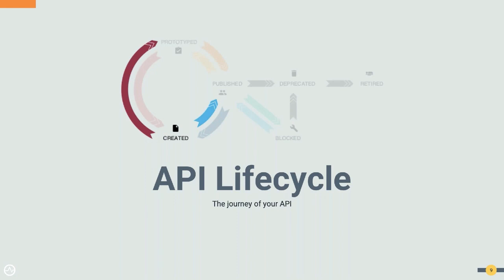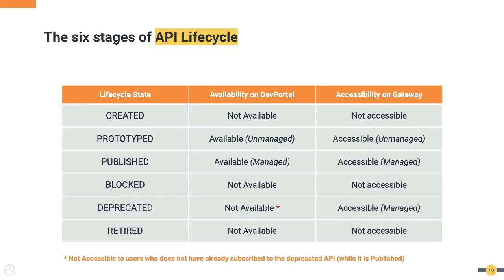There are six stages of the API lifecycle: Created, Prototype, Published, Blocked, Deprecated, and Retired. An API always starts its journey from the Created state and finishes in the Retired state. The API will have different characteristics while in each state. In the Prototype state, the API will be available in the developer portal for application developers and also accessible in the gateway.